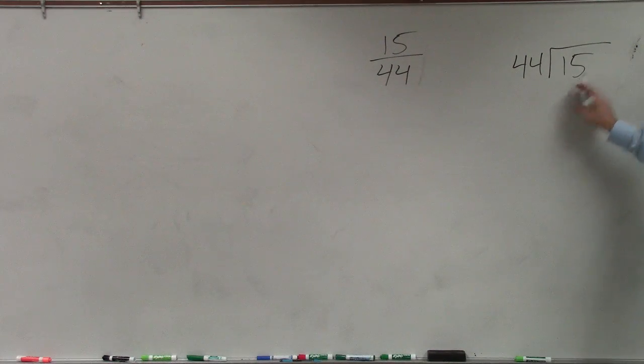Now remember, 44 does not go into 15. So I create a decimal point. And then I have an unlimited bank of zeros.